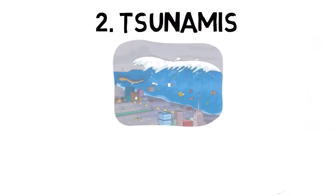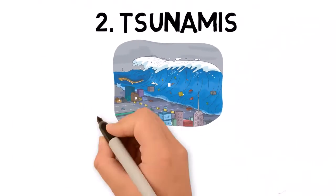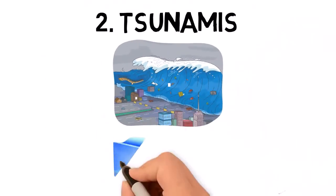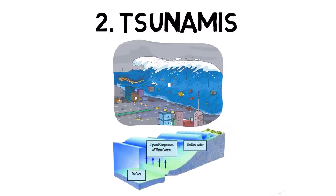Tsunamis are large ocean waves caused by underwater earthquakes, volcanic eruptions, or landslides. When the ocean floor is suddenly displaced, it can generate a series of waves that travel across the ocean at high speeds.